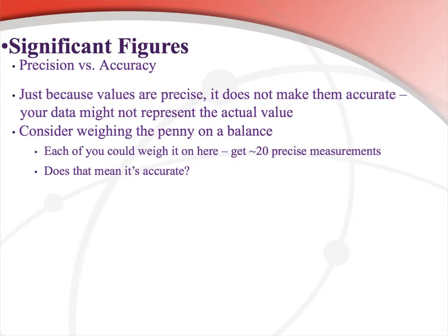Just because your values are precise does not necessarily make them accurate — we talked about the difference between accuracy and precision in the last video. Your data might not represent the actual values. For that penny example from the end of the last video, say every student weighed it and every time got 2.47 grams. That's a precise value, but it's not accurate — it should be 2.5 grams. So precision here refers to how many numbers we're writing down in our data.